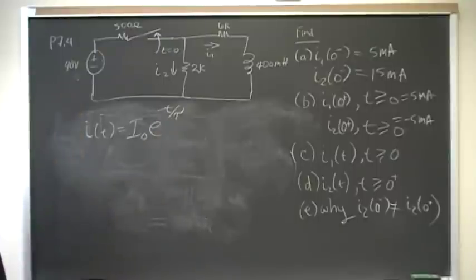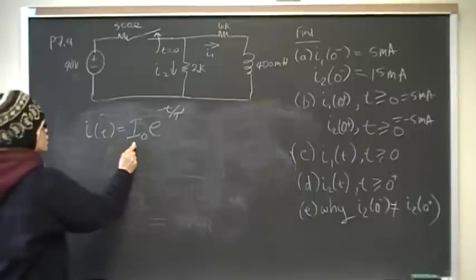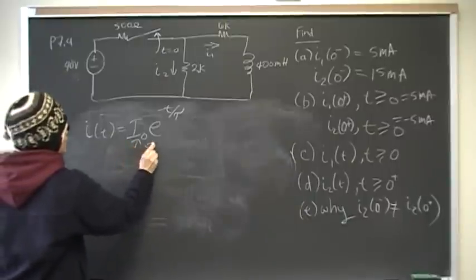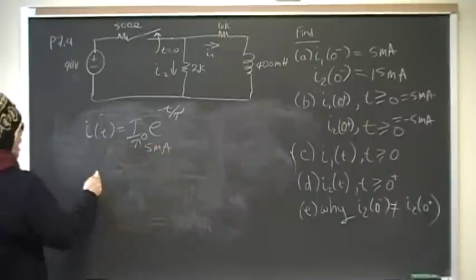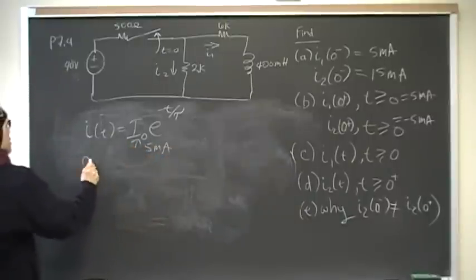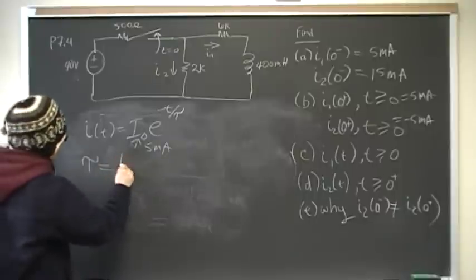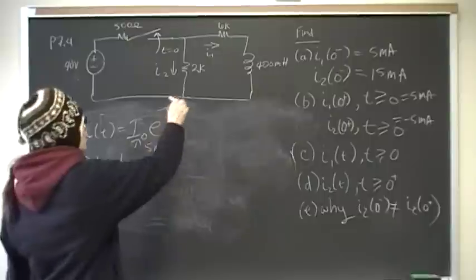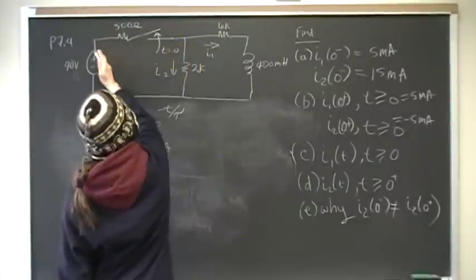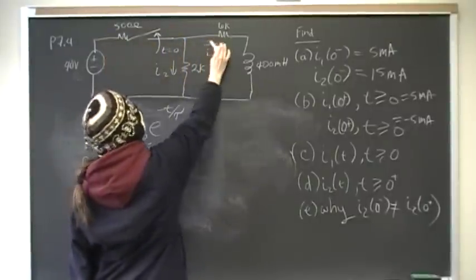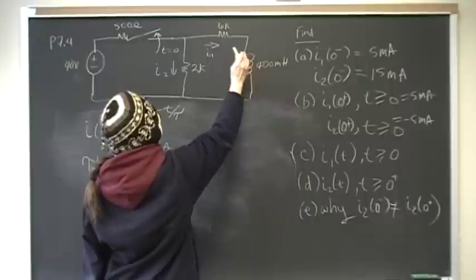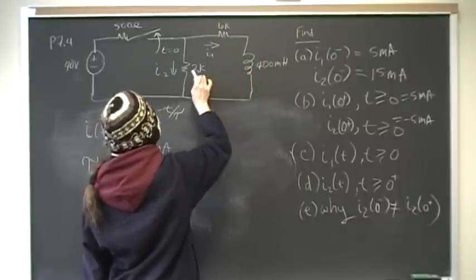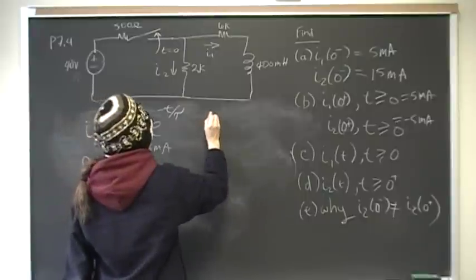That's our equation. For I1, the initial current is 5 milliamps, so we need to find tau. Tau equals L over R. Referring back to the circuit — after the switching, this part of the source goes away. We have 6k in series with the 400 millihenry inductor.